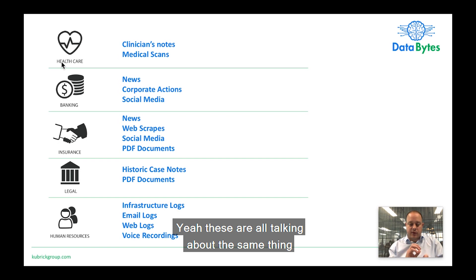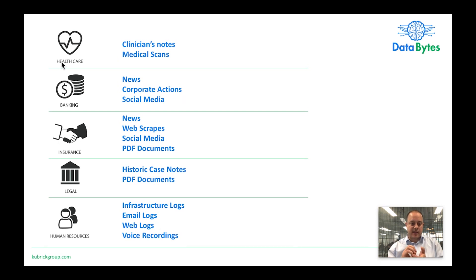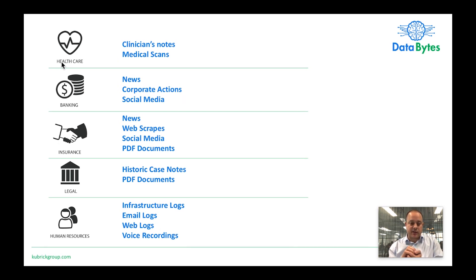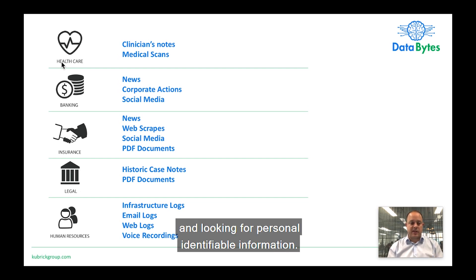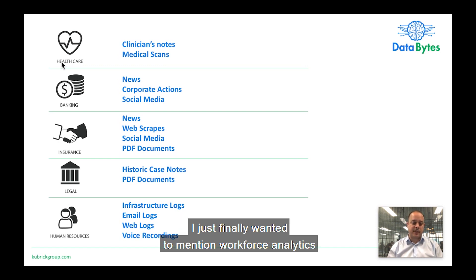Even if documents are written in different languages, we can still translate and then cluster them into a single term. As well as searching PDFs and looking for personally identifiable information, this can all be automated, which is fantastic.